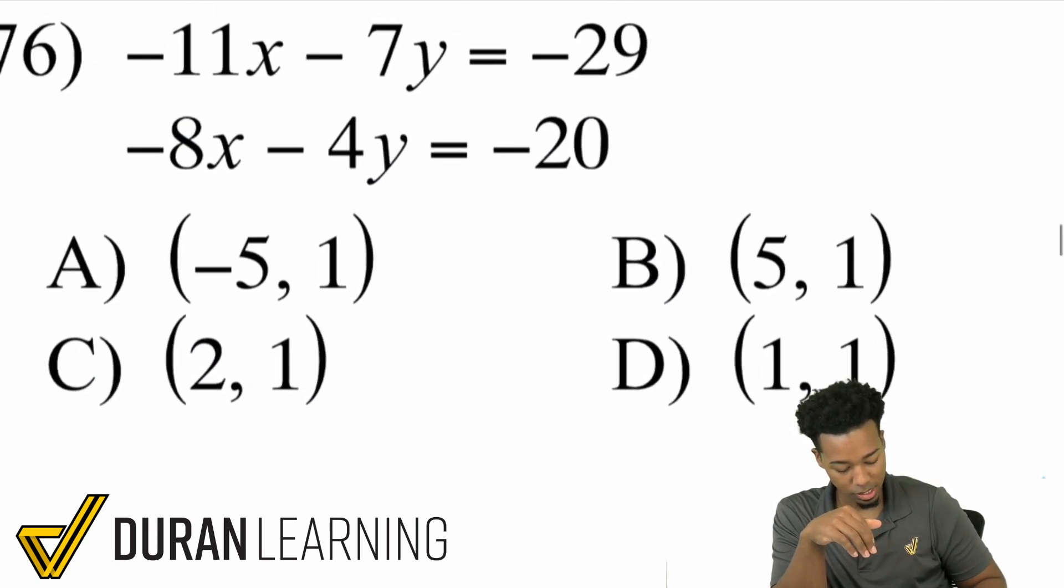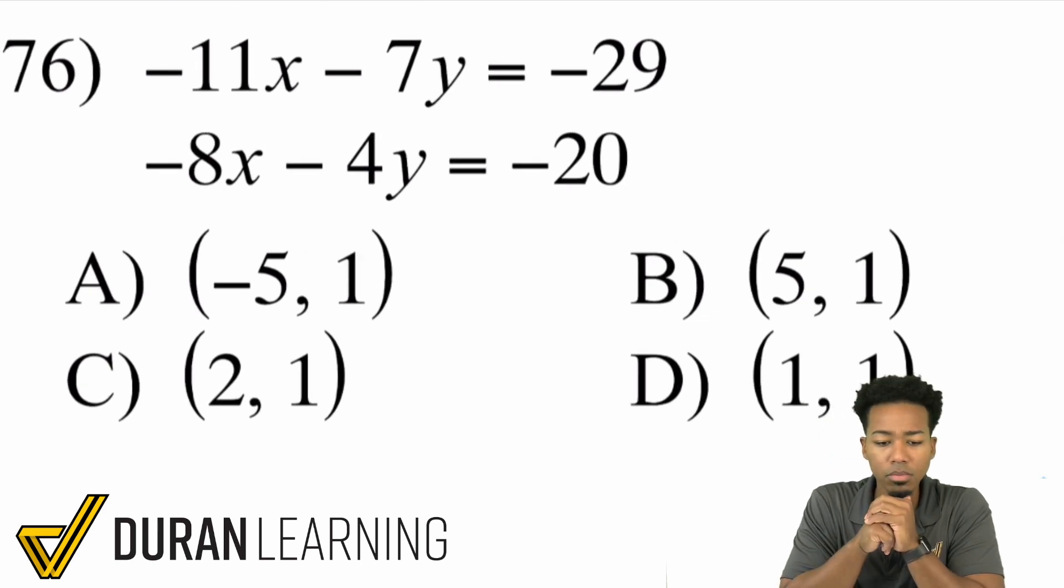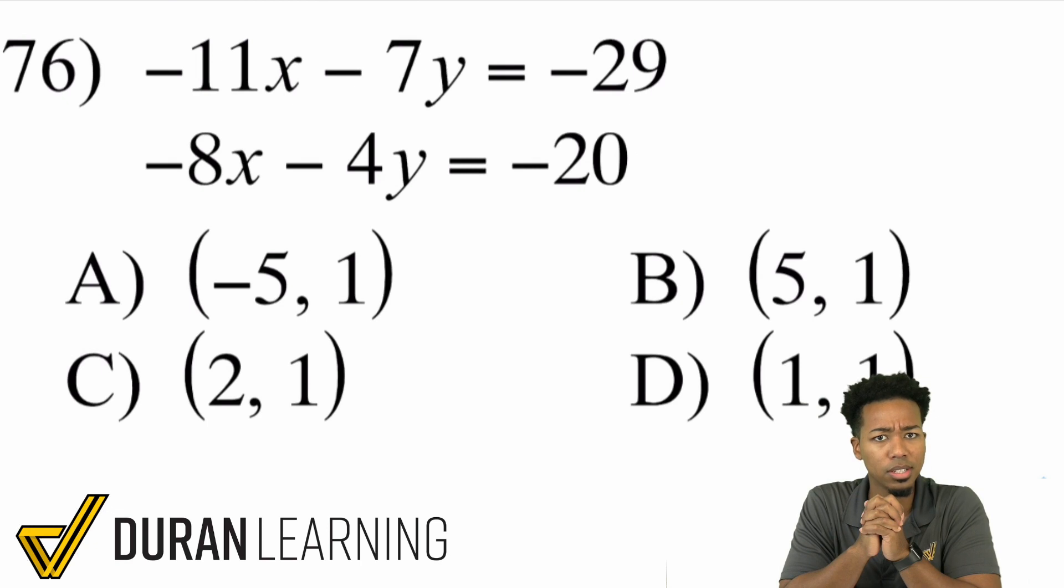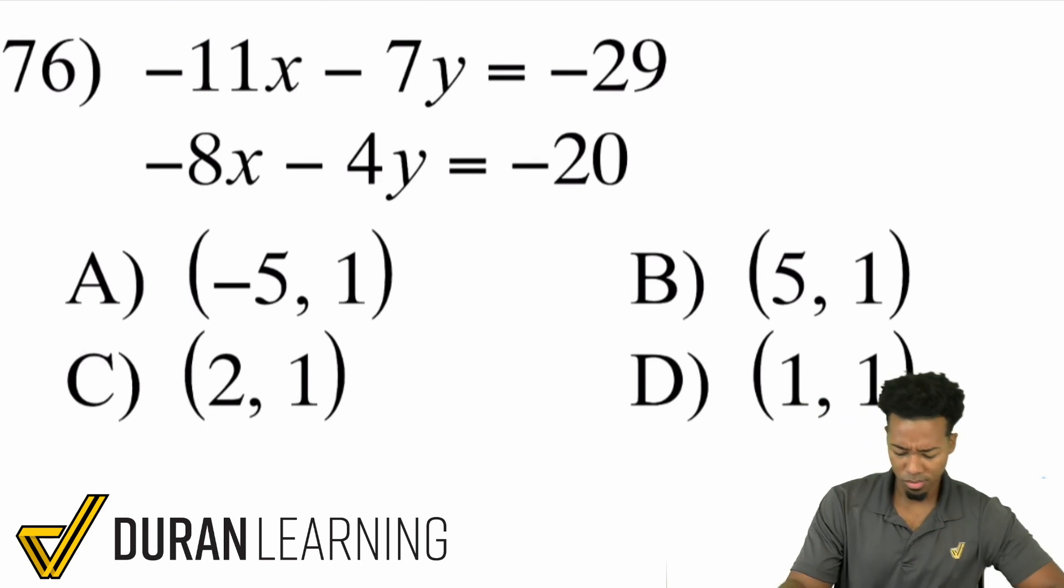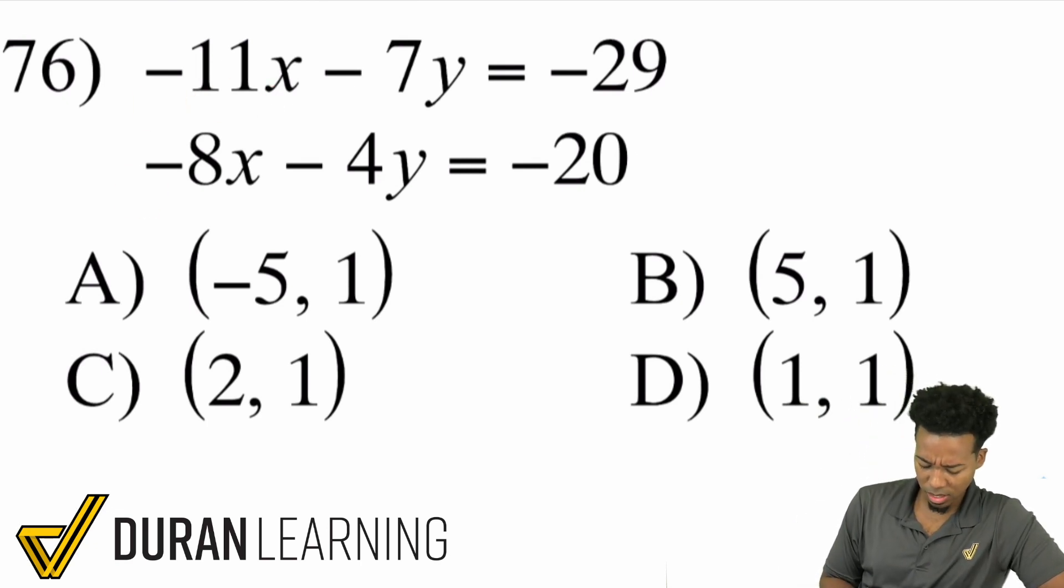Let me show you how. Let's take a look at this one over here, number 76. Take a look here. There's nothing that we can easily multiply one equation by to get that elimination. If you look at the first one, we have negative 11x and 8x. Well I can't multiply 8 by some whole number to get 11. Notice over here, 7 and 4, 4 doesn't go into 7.